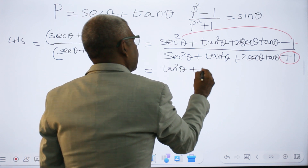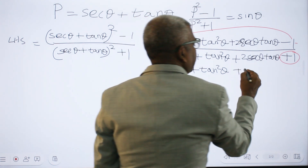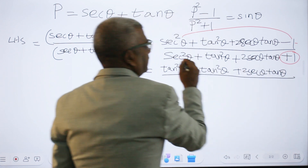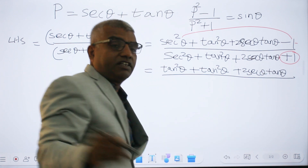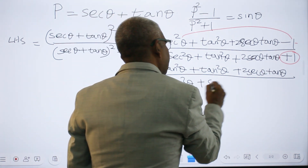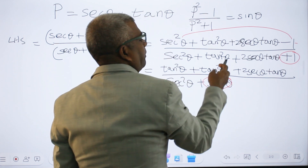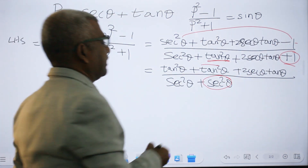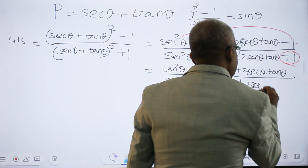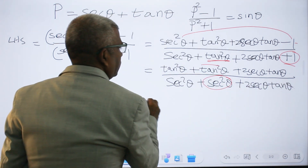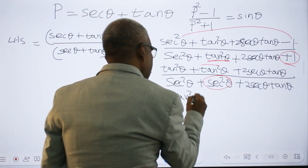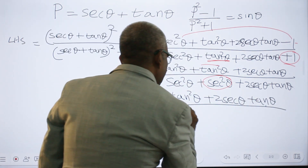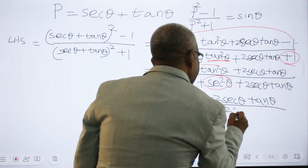Substituting into the numerator: secant squared θ minus 1 becomes tan squared θ, so we get tan squared θ plus tan squared θ plus 2 secant θ tan θ, which is 2 tan squared θ plus 2 secant θ tan θ. In the denominator: tan squared θ plus 1 is secant squared θ, giving secant squared θ plus secant squared θ plus 2 secant θ tan θ, which is 2 secant squared θ plus 2 secant θ tan θ.